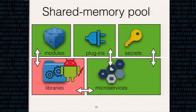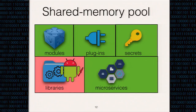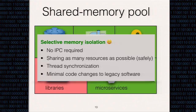If we could safely bring all these process address spaces together and therefore remove the expensive IPC, programmers will be able to selectively isolate process memory and have an efficient and secure partially shared memory pool. This allows the program to share as many resources as possible at the system level, while thread synchronization still works, and code changes are minimal in terms of memory access and data sharing.